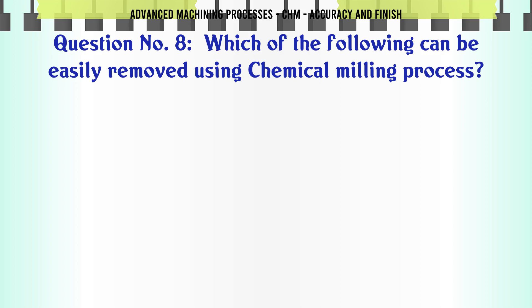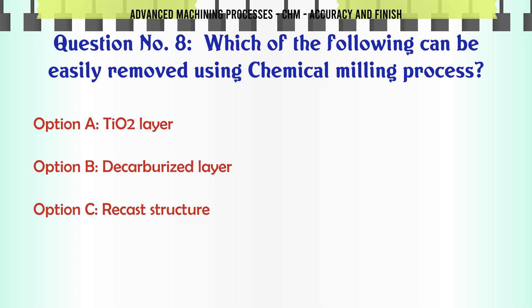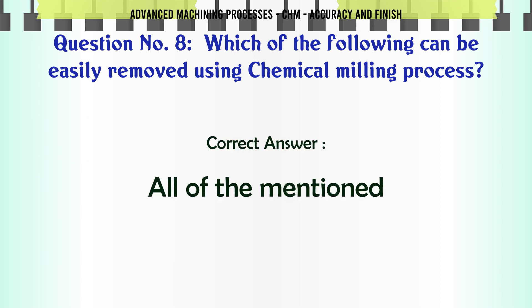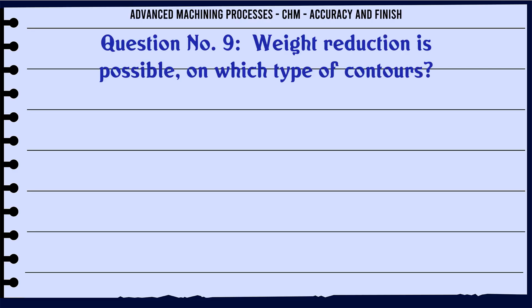Which of the following can be easily removed using the chemical milling process? A. The O2 layer. B. Decarburized layer. C. Recast structure. D. All of the mentioned. The correct answer is all of the mentioned.